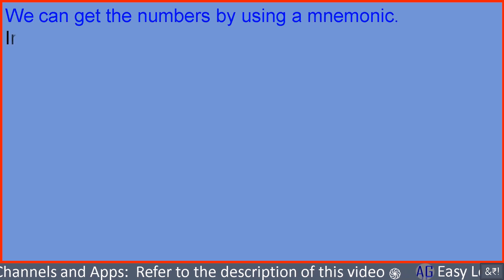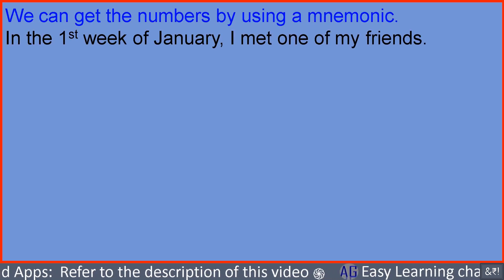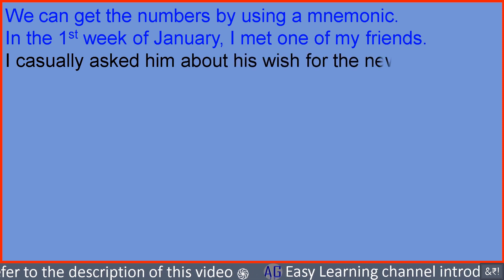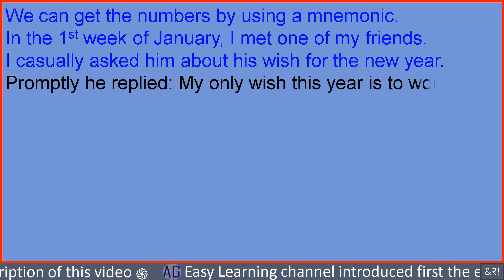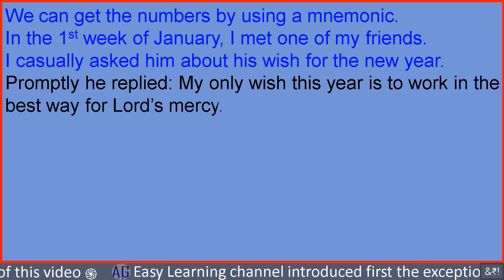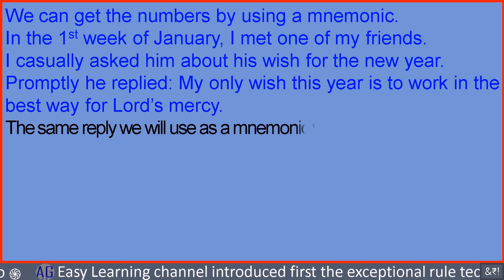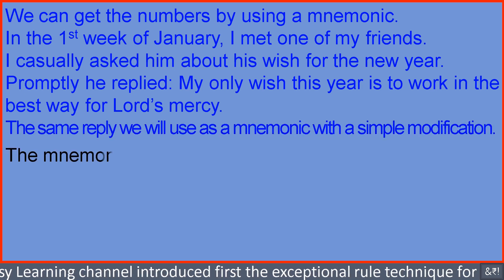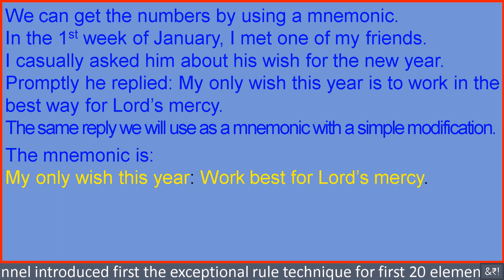We can get those numbers by using a mnemonic. In the first week of January, I met one of my friends. I casually asked him about his wish for the new year. Promptly he replied: 'My only wish this year is to work in the best way for Lord's mercy.' We will use the same reply as a mnemonic with a simple modification. The mnemonic is: My only wish this year, work best for Lord's mercy.